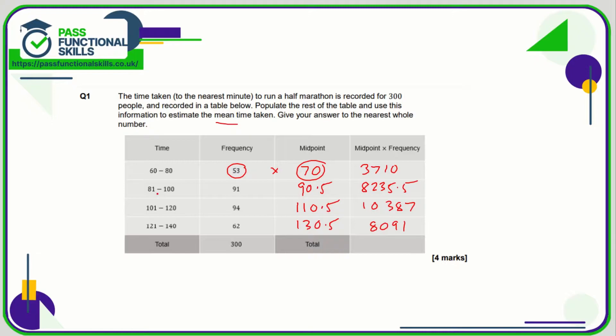We don't, again we don't know exactly what their times were, but we're assuming this is halfway between 81 and 100. So therefore if I add up all these row totals, I'm going to get 30,423.5.